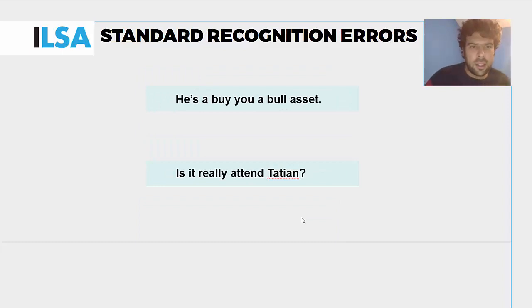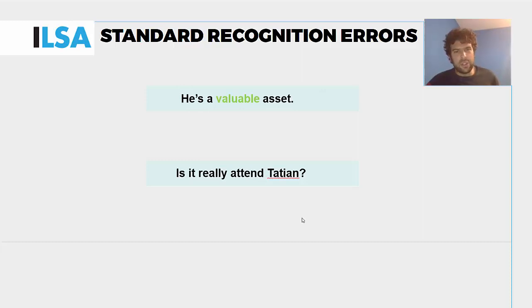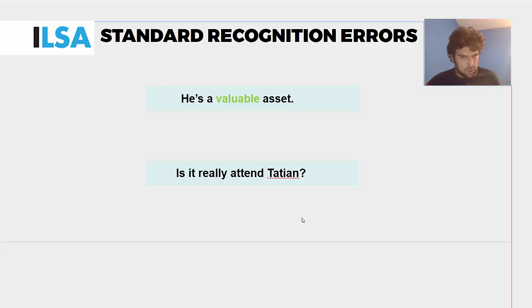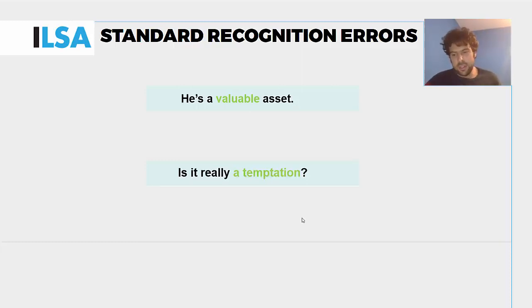Moving on to standard errors, consider: 'He's a buy you a bull asset.' For most viewers, this is puzzling — it's nonsense and they would just lose information. Only a few would realize the original was 'he's a valuable asset.' That's a standard recognition error, penalized with 0.5. Similarly, 'Is it really a temptation?' — when just glancing at subtitles quickly, it's not easy to know what the audio actually said. Not only do you lose information, but you recognise it as an error. You know it's an error but don't know what it's about. That's a standard error — minus 0.5.